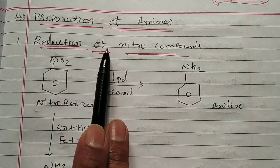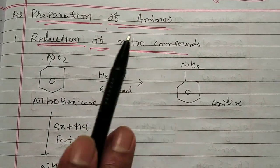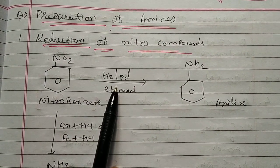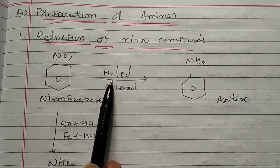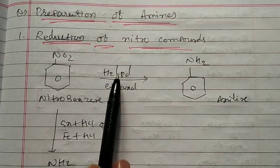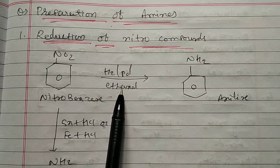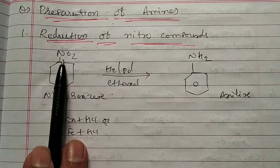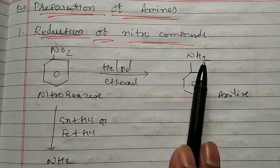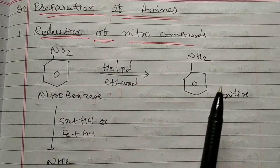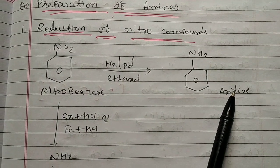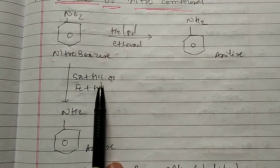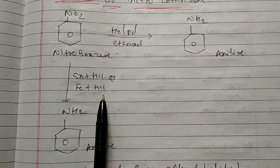First is really very easy, reduction of nitro compound. So we will start with nitrobenzene in the presence of simple mild reducing reagent, H2/Pd in ethanol. Ethanol behaves as a solvent. So when nitrobenzene is treated with H2 and Pd, this NO2 functional group is reduced and converted into NH2. So nitrobenzene into aniline.